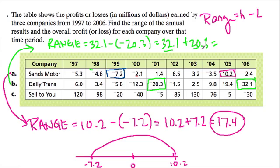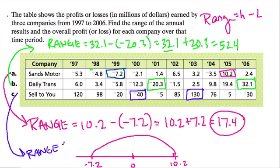Really here what we're doing is adding, so it's 32.1 plus 20.3. That's 52 and 0.1 and 0.3 is 0.4 so that's 52.4. In the last one Sell to You this company looks like the highest is 130 and the lowest is negative 40. Our last range will be 130 minus negative 40, and that's 130 plus 40 or 170. So those are the ranges for each of the companies.